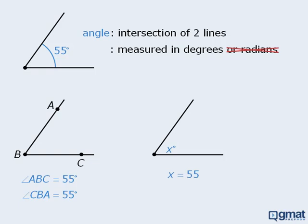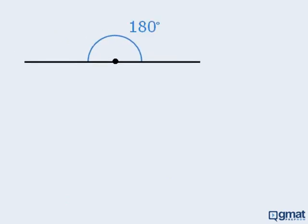Now the measurement of any angle can be thought of in terms of its relationship to the angle found in a straight line. This angle is equal to 180 degrees.